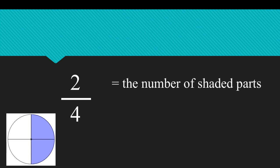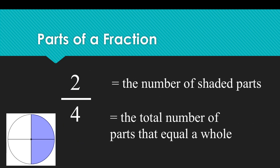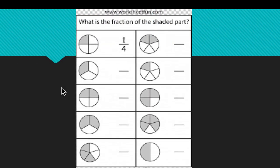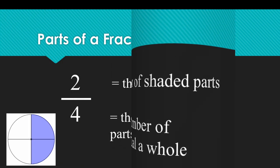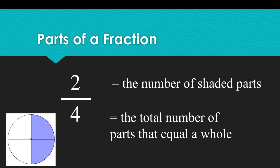What are the parts of a fraction? Look at this fraction. We have two numbers and a line. Number four represents how many parts in all are in the shape — four equal parts — written at the bottom. And number two means how many parts are shaded, written on the top. These are the parts of a fraction.